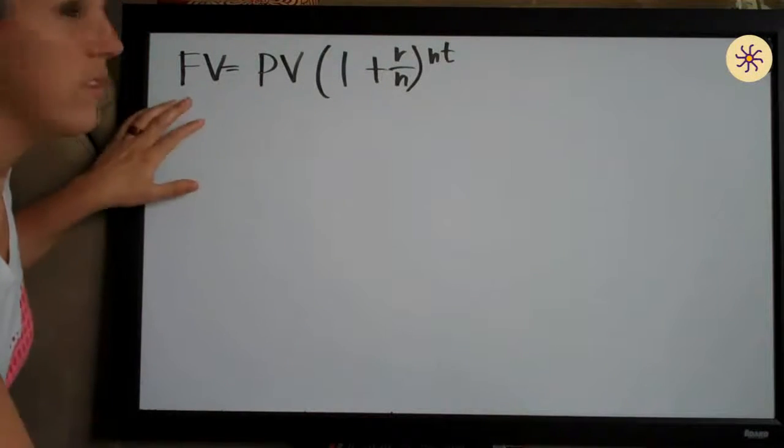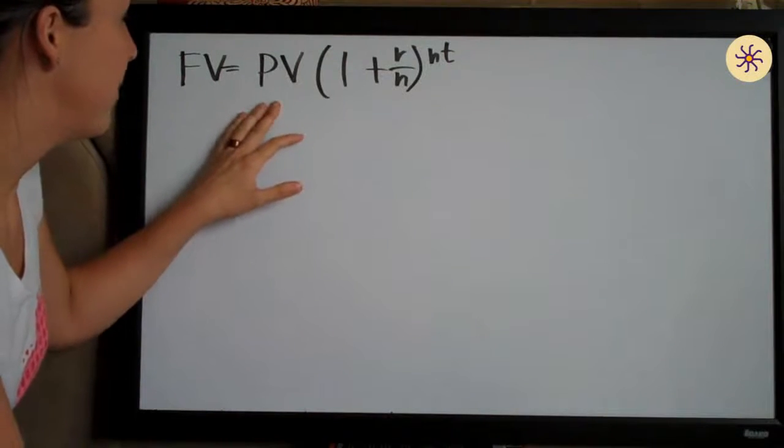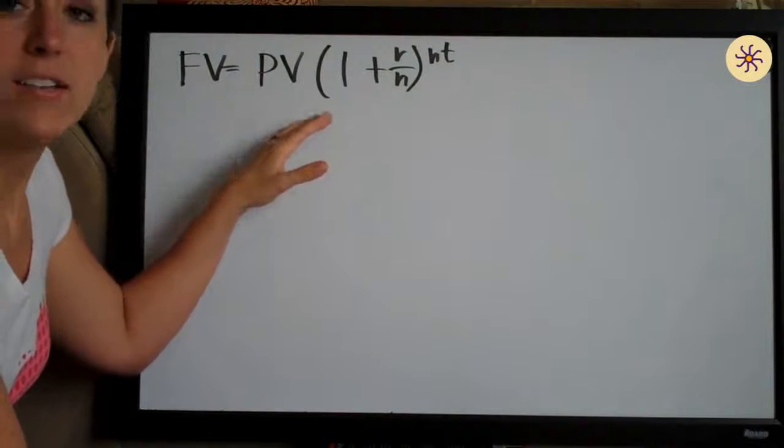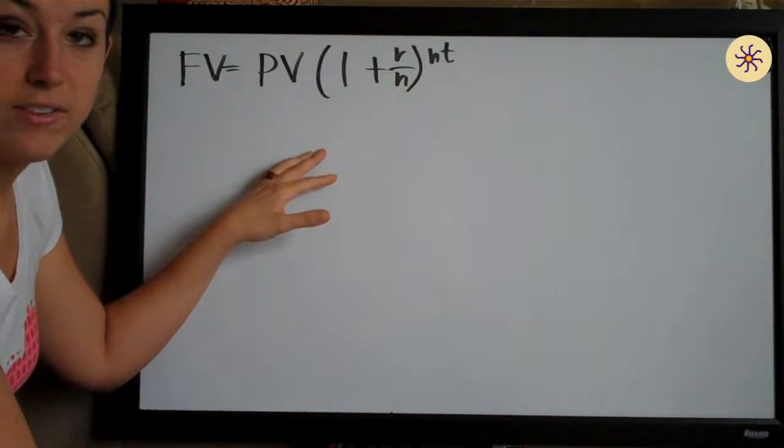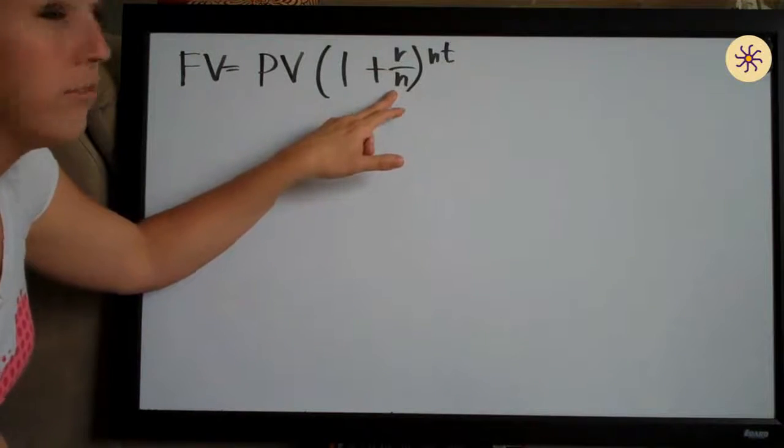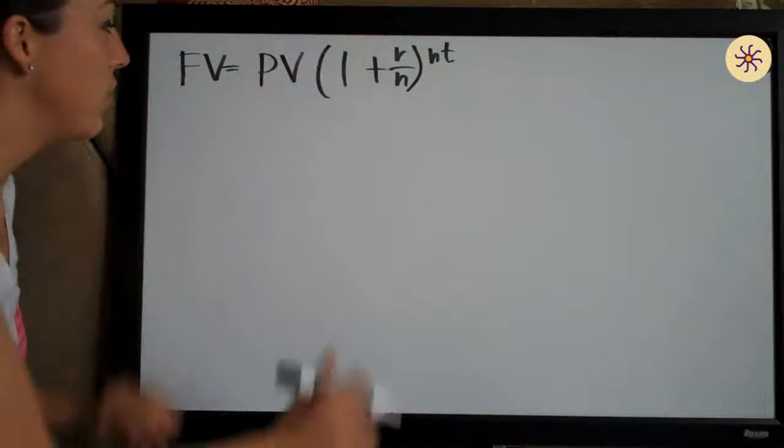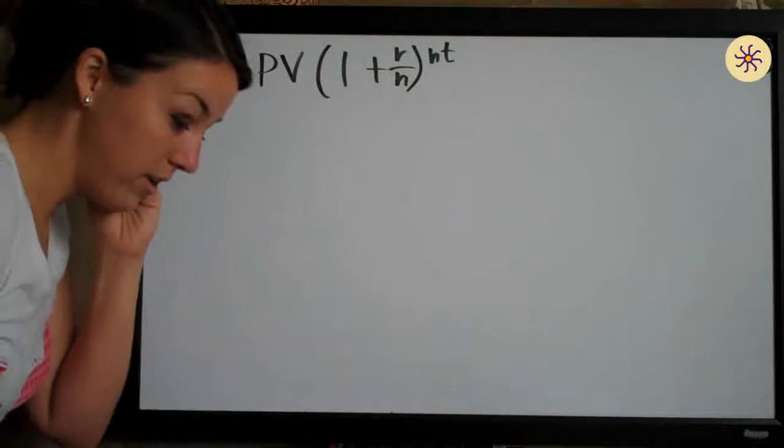This one involves this future value formula here, and the reason that it involves this formula instead of PV e to the rt is because we are not compounding our interest continually. We're compounding at a certain number of times per year, so we use this formula instead of that continuously compounded formula.